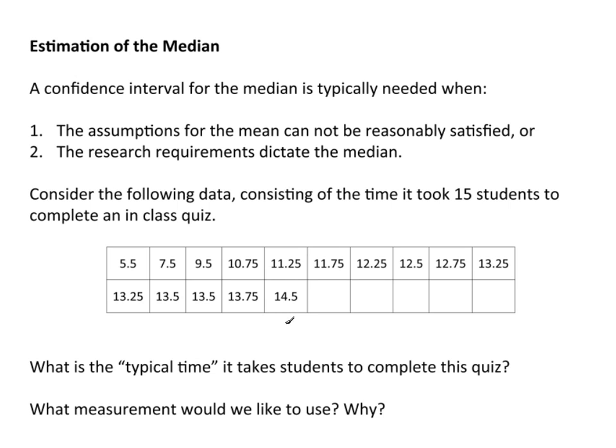A confidence interval for the median is typically needed under two situations. The first and most common: the assumptions for the mean cannot be reasonably satisfied. If you try to do a confidence interval for mu and the assumptions are not satisfied, you have gross violations, then you would switch to the median. It's the next best thing. They both measure the center. They just do it differently.